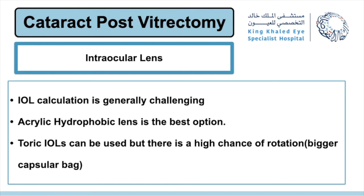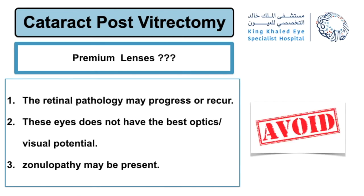Intraocular lens calculation is generally challenging in these eyes. Acrylic hydrophobic lens is the best ideal option for these patients. Toric IOL can be used, but there is a higher chance of rotation. Should we use premium lenses in those patients? The lenses are getting better and better; however, there are many cons: retinal pathology may progress and recur, these eyes do not have the best optics or visual potential, and zonulopathy may be present. Therefore, it's better to avoid premium lenses in those patients.